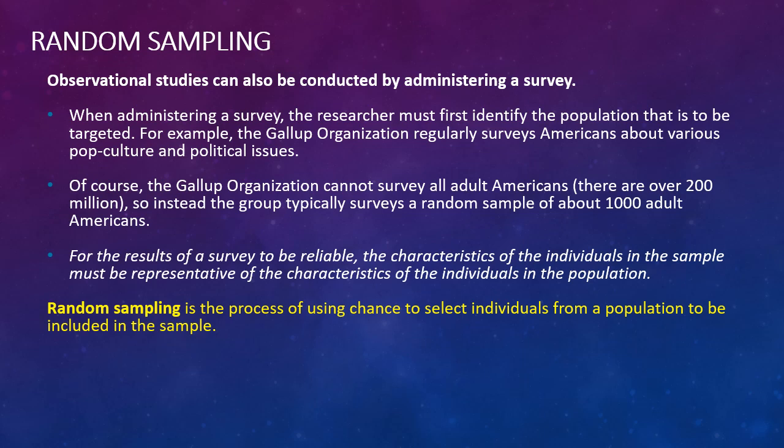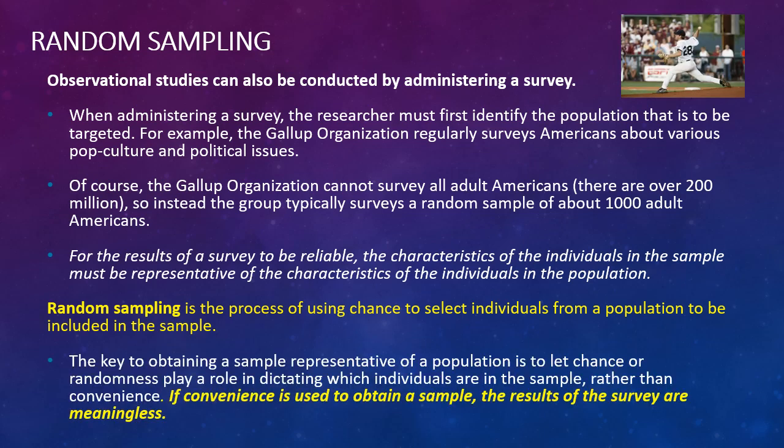The individuals in the sample have to be representative of the characteristics in the population. And what this is really talking about is that how you select has to be based upon randomness and not convenience. And your book gives a great example about this.